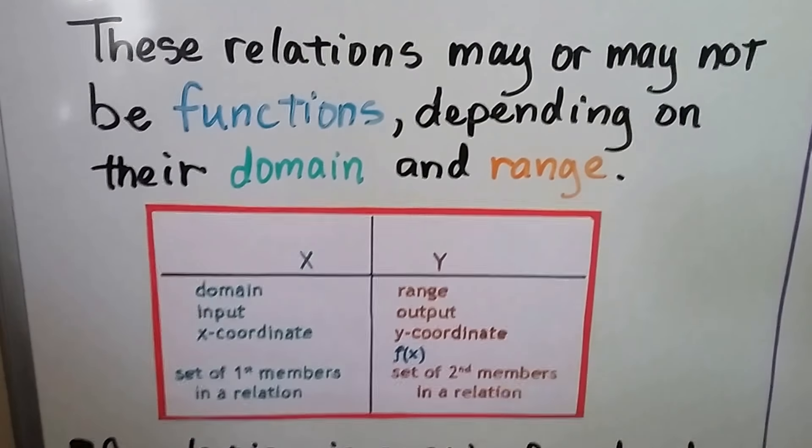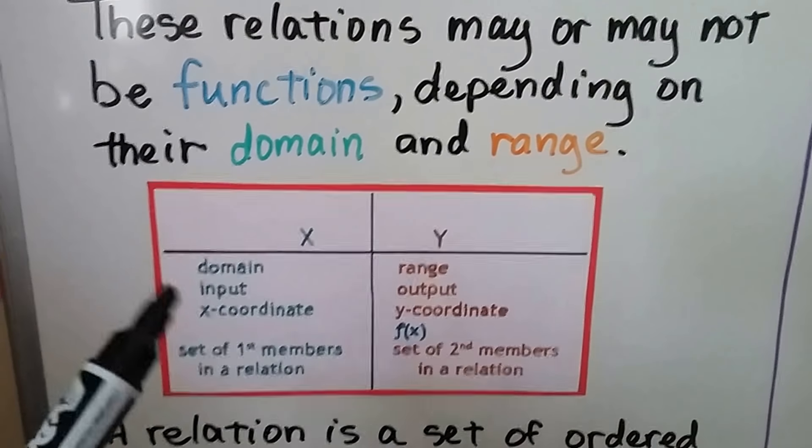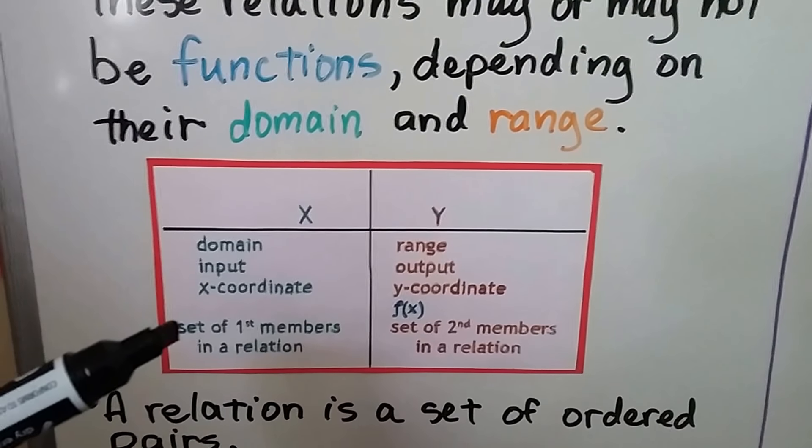So if you remember from middle school and from Algebra 1, we have x and y values. The x values are the domain, the input, the x coordinate, and they're the set of first members in a relation.